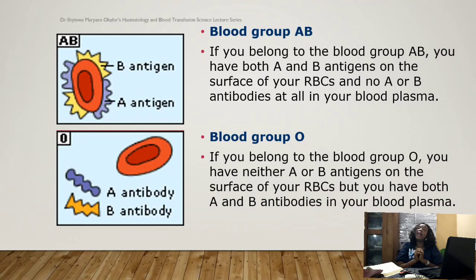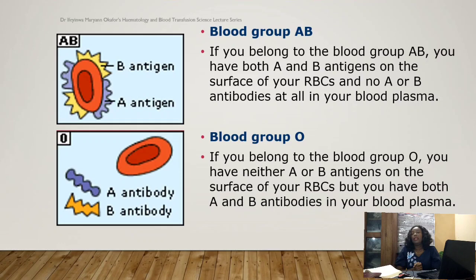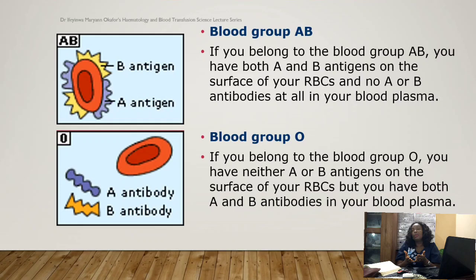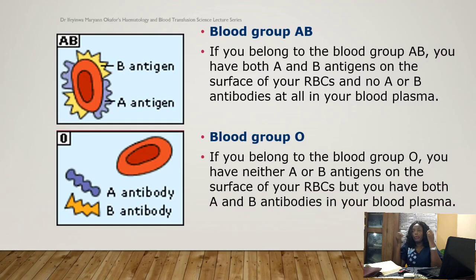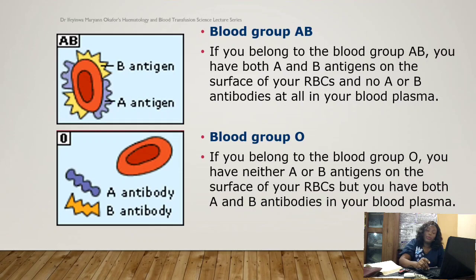Individuals who are blood group AB have both A and B antigens on the surface of their red blood cells, and following Landsteiner's rule, their plasma contains no antibody — neither anti-A nor anti-B. Individuals who are blood group O do not have any A or B antigens on the surface of their red blood cells, but in their plasma they have both anti-A and anti-B.